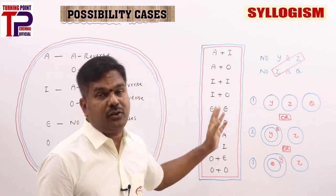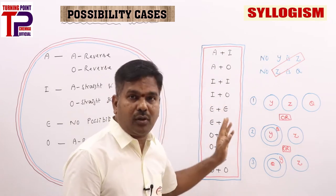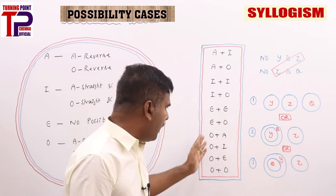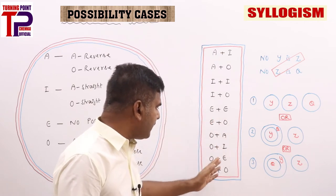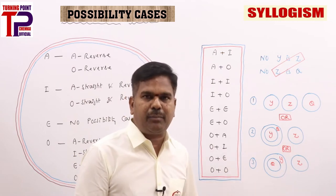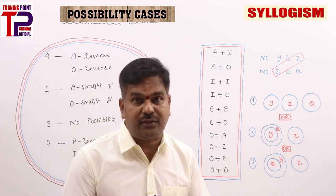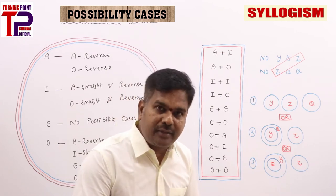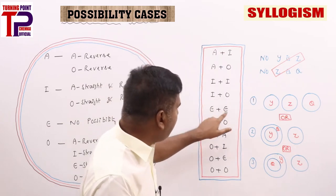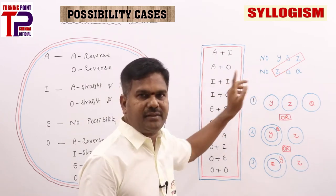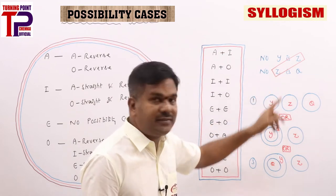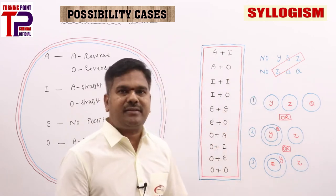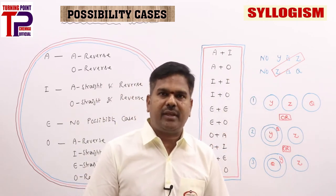A plus I gives no conclusion though properly aligned. A plus O gives no conclusion though properly aligned. Same for I plus I, I plus O, E plus E, E plus O, O plus A, O plus I, O plus E, and O plus O — even properly aligned, you won't get any conclusion based on the six rules. But as far as possibility cases are concerned — suppose I take E plus E: no Y is Z and no Z is Q.